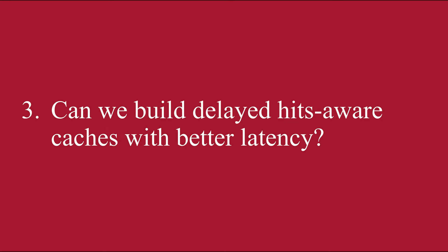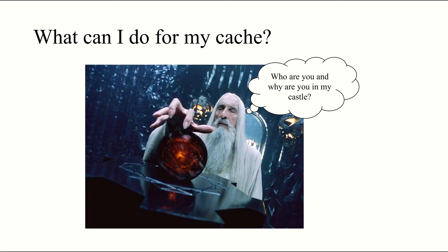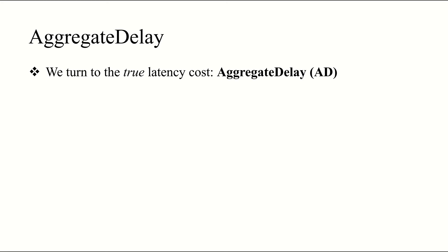So the big question is, can we build delayed hits-aware caches that provide lower latencies than today's systems? All of the theory that I've presented so far tells us that there's a problem with modeling caches as having only hits and misses, while ignoring the contribution of delayed hits. While this is well and good, what can I do for my key value cache to achieve better latency? After all, in the real world, I don't have access to an oracle that can tell me the future.